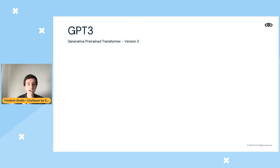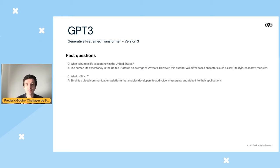Although GPT-3 wasn't trained for a specific task, it could do all kinds of tasks. You could ask it questions about facts, like what's the human life expectancy in the United States, or what is Sinch — and it could come up with the correct answer: Sinch is a cloud communications platform for messaging and video.